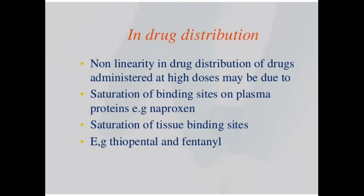Nonlinearity in drug distribution of drugs administered at high doses may be due to saturation of binding sites on the plasma proteins, example naproxen, and saturation of tissue binding sites, example drugs like thiopental and phenytoin. So we can see in distribution, if protein binding sites are being saturated and if tissue binding sites are being saturated, then again competitive behavior starts and dose independence occurs which leads to nonlinearity.